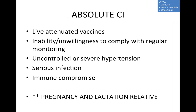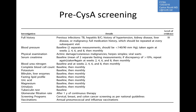Absolute contraindications include receiving live attenuated vaccines, non-compliance, uncontrolled or severe hypertension, serious infections, and immunocompromised states. Pregnancy is category C. Before starting cyclosporine, patients should be screened for tuberculosis, hepatitis B and C, history of hypertension, kidney disease, liver disease, and malignancies.